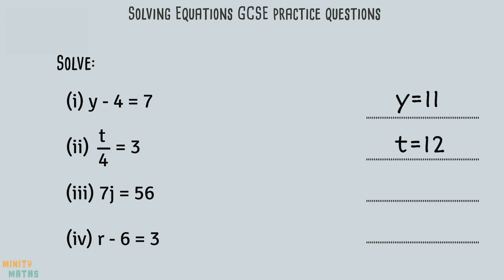For question 3, we are told that 7 lots of j equals 56, so we need to find out what 1j would equal. To do this we divide both sides by 7 so we are left with 1j. For the final part, we can add 6 to both sides of the equation.